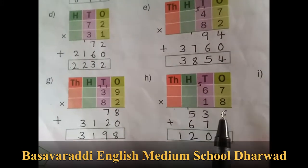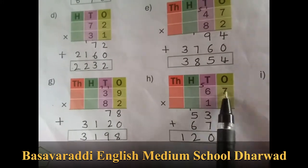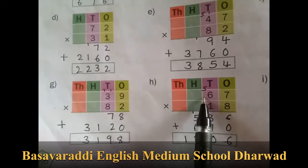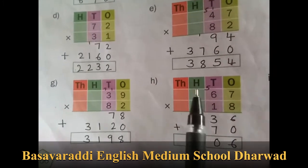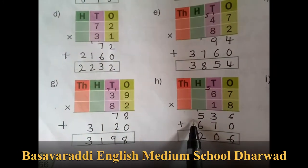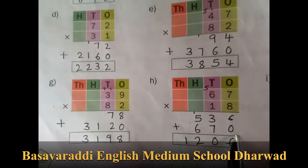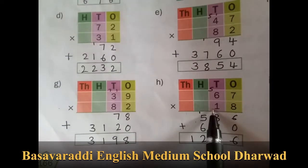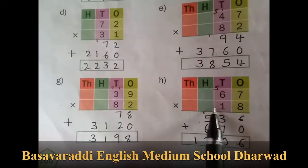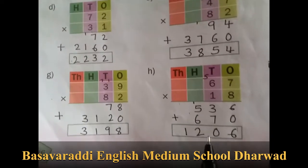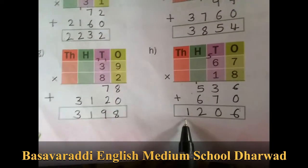67 into 18: 8 times 7 is 56, and 8 times 6 is 48, plus 5 is 53. Putting 0 here for the ones space. Moving to tens place: 1 times 7 is 7, 1 times 6 is 6. Then we are adding. The answer is 1206.